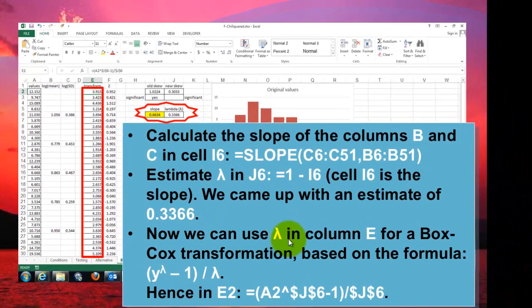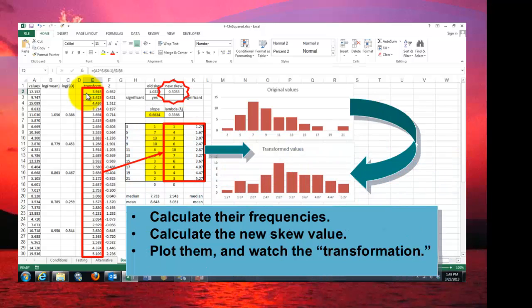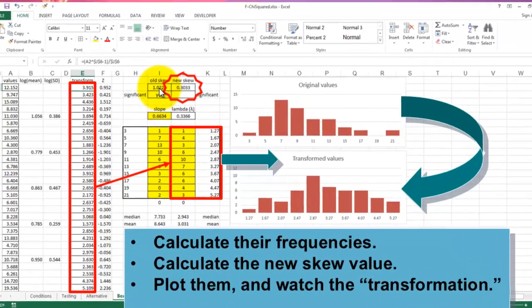Now we can use that lambda factor in column E for a Box-Cox transformation based on the formula that we discussed already. So in E2 we have equals A2 to the power of J6 always and ever, minus 1, J6 is lambda, divided by the lambda factor. And we found out that when you plot them in frequency bins, you get a pretty normal distribution. And the new skew value changed from 1.0 to 0.30. So the transformation was pretty successful.